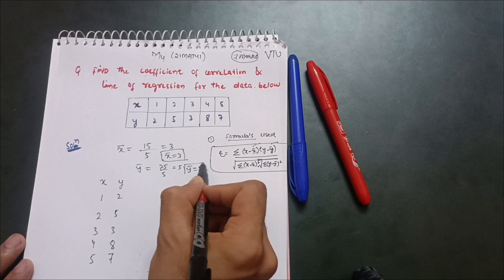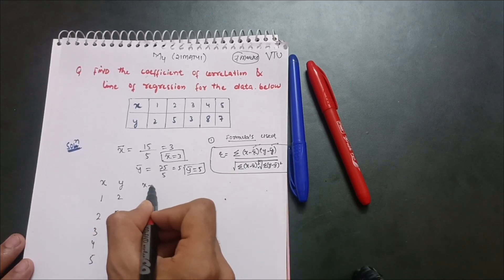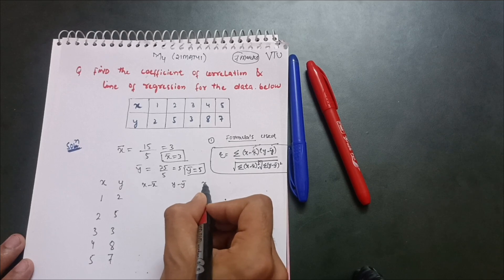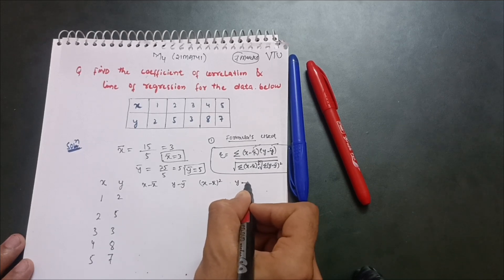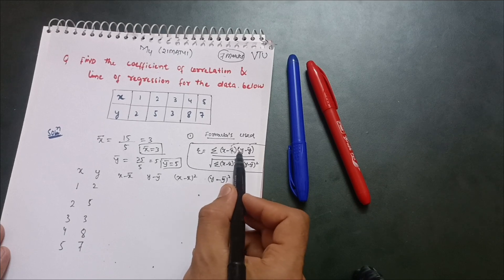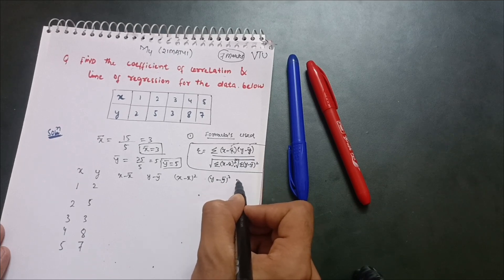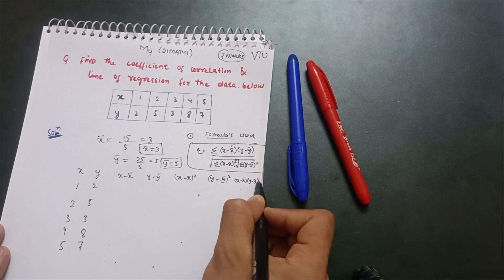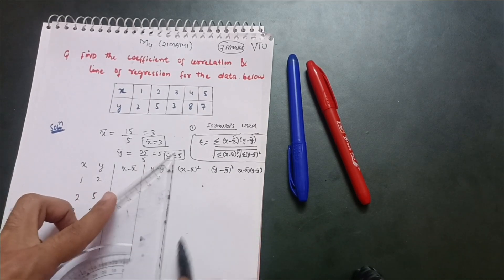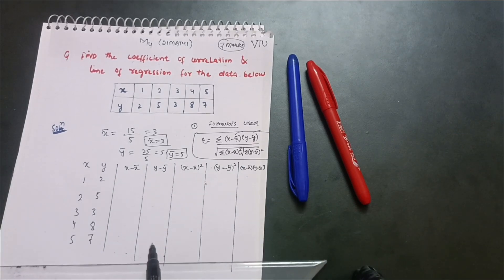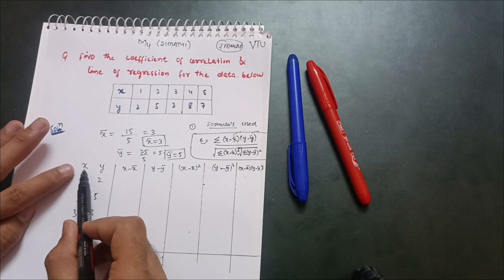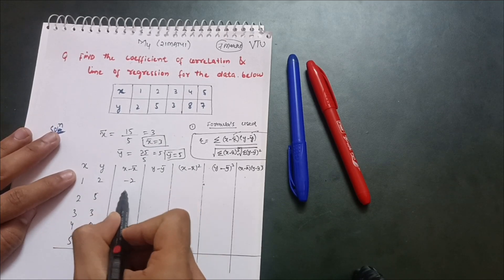Now calculate x minus x̄ and y minus ȳ columns, then (x minus x̄)², (y minus ȳ)², and the product (x minus x̄)(y minus ȳ). For x minus x̄: 1−3 = −2, 2−3 = −1, 3−3 = 0, 4−3 = 1, 5−3 = 2.